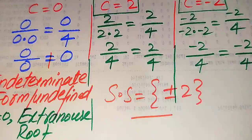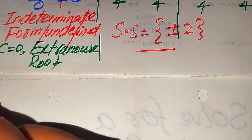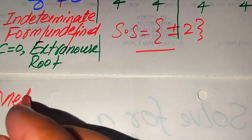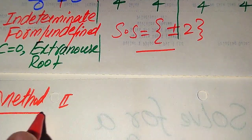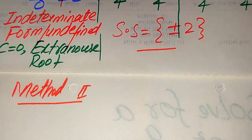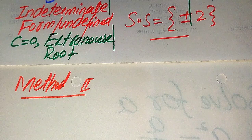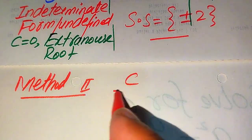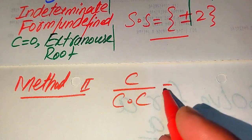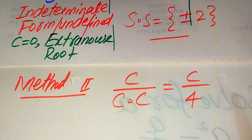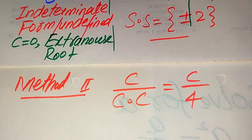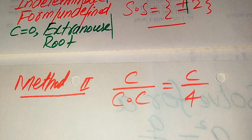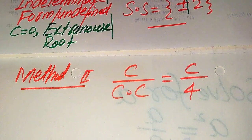The final solution set from the first method is plus or minus 2. Now we solve this problem using a second method. We copy down the given equation: c divided by (c multiplied by c) equals c divided by 4. In the second method we get the roots of c directly in a very short way.